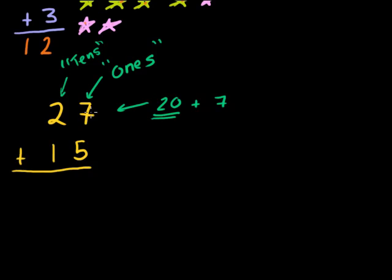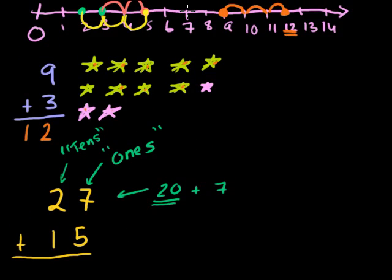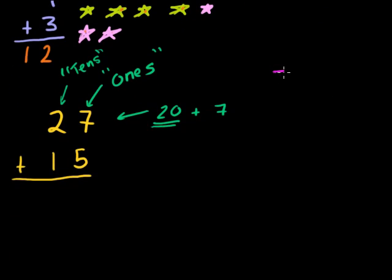But the way to do these problems is you just look at the numbers in the ones place and add those up first. So you say, okay, I'm not going to worry about this whole thing right now. Let me just add the 7 and the 5. And if you don't know what that is, you could look at the number line. So if you take 7 and you add 5 to it: 1, 2, 3, 4, 5, we end up at 12. So we know that 7 plus 5 is equal to 12.